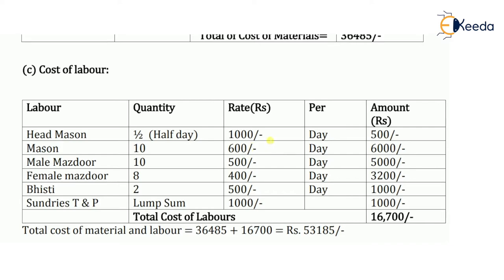Mason's required will be 10, at a rate of 600 rupees per day. Male mason required will be 10 at 500 rupees per day. Female mason required will be 8 at 400 rupees per day. Bisti required will be 2 at 500 rupees per day. I am also adding sundries with a lump sum amount of 1000 rupees. Sundries are miscellaneous or petty items which cannot be separately listed and are directly taken as a lump sum amount.